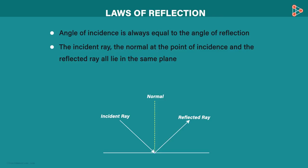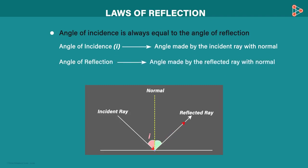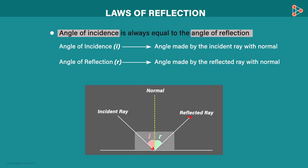To understand the first one, we first need to know what angle of incidence and angle of reflection are. The angle of incidence is the angle made by the incident ray with the normal. It is denoted by i. The angle of reflection is the angle made by the reflected ray with the normal. It is denoted by r. So our first law says that the angle of incidence is always equal to the angle of reflection. i is equal to r.